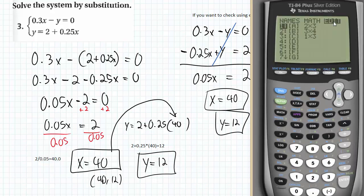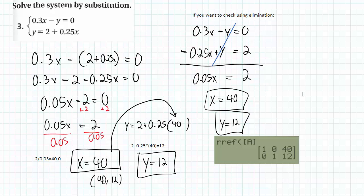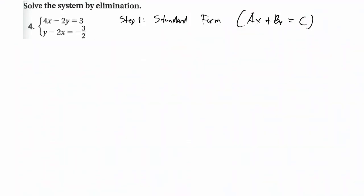You can even, if you want, solve it using matrices, since this is in standard form. Plug that in there. Do the RREF, which stands for row reduced echelon form. Now that you need to know that, but there you go. x equals 40, y equals 12. Three methods to solve that equation. You can choose any one you want.